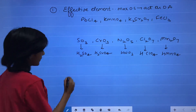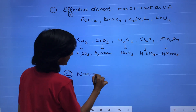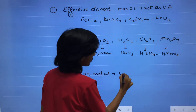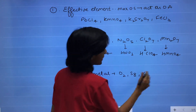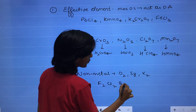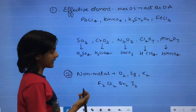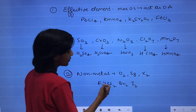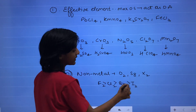In non-metals, examples of oxidizing agents include O2, S8, and halogens. Among halogens — fluorine, chlorine, bromine, and iodine — fluorine is the strongest oxidizing agent, followed by chlorine, then bromine, then iodine.